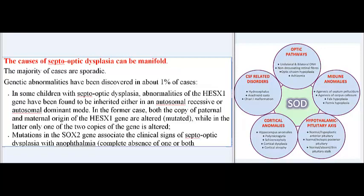In the autosomal recessive case, both the paternal and maternal copies of the HESX1 gene are altered (mutated), while in the autosomal dominant case, only one of the two copies of the gene is altered.